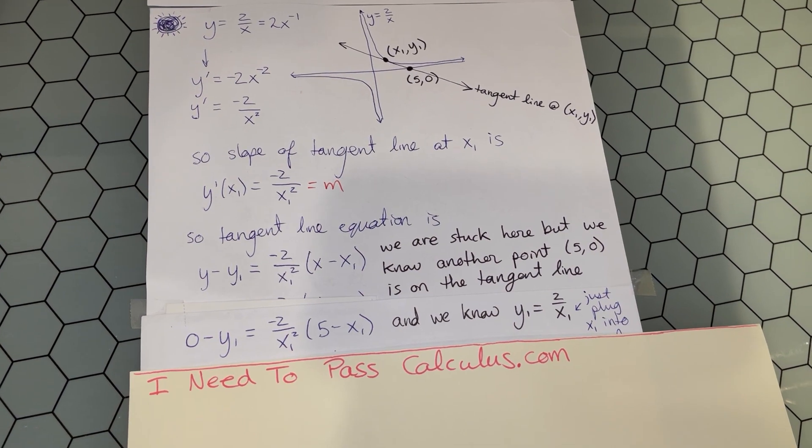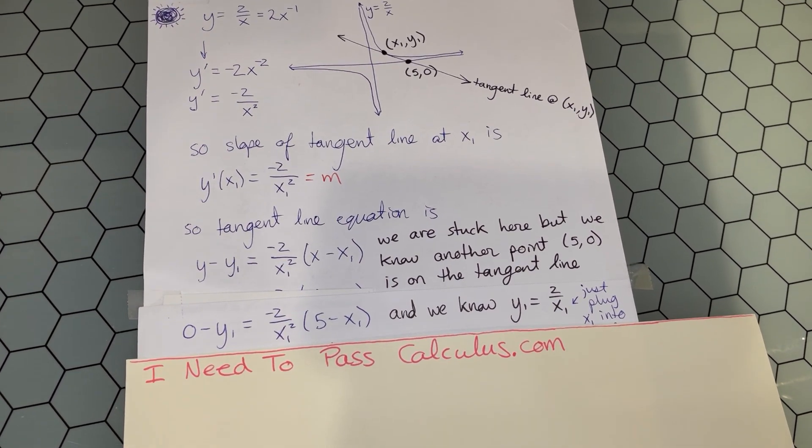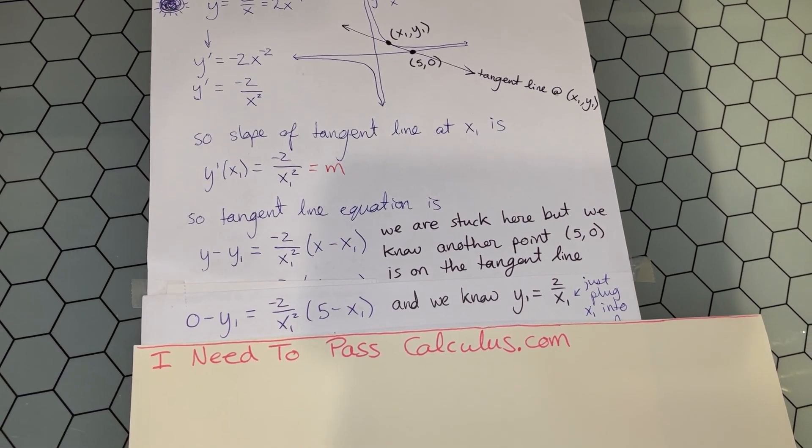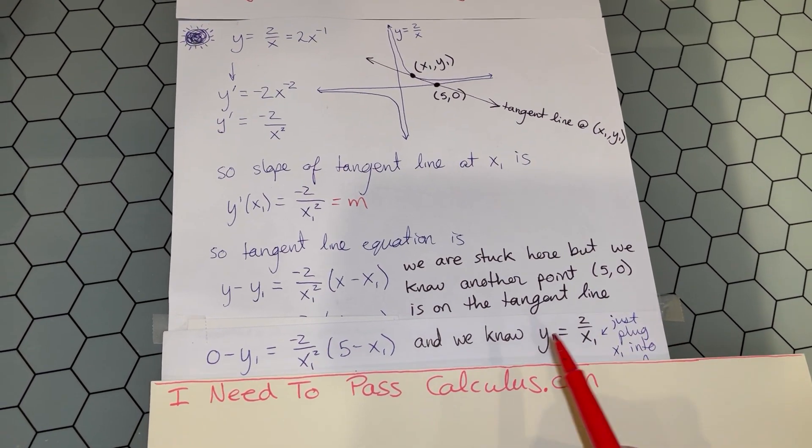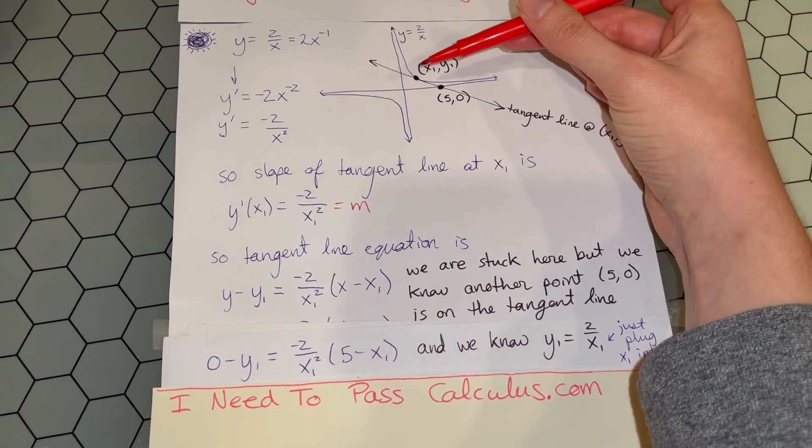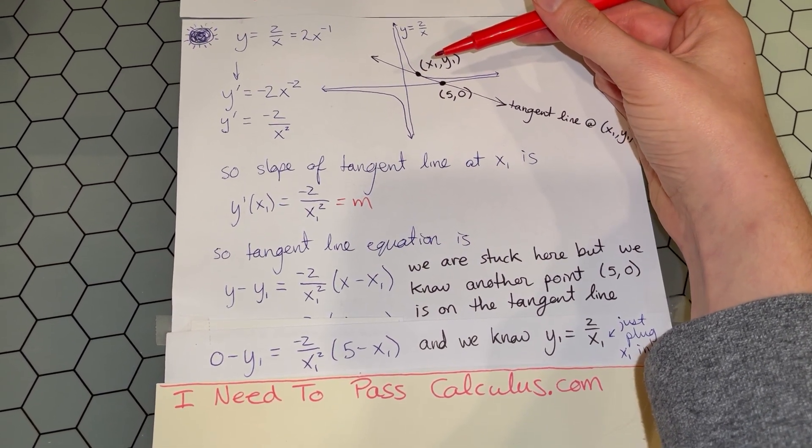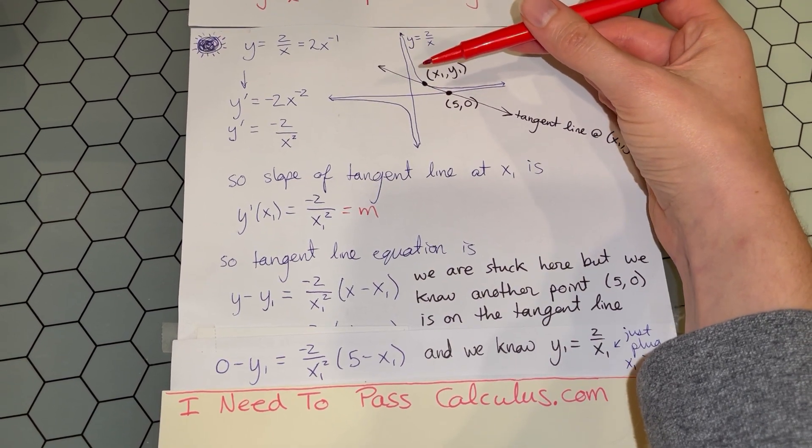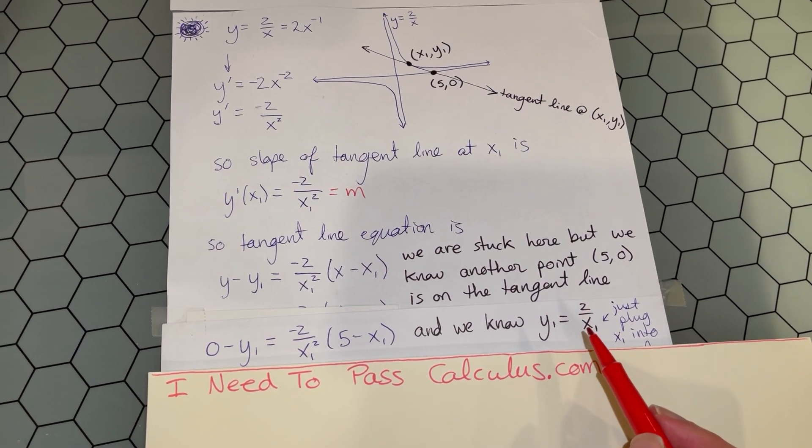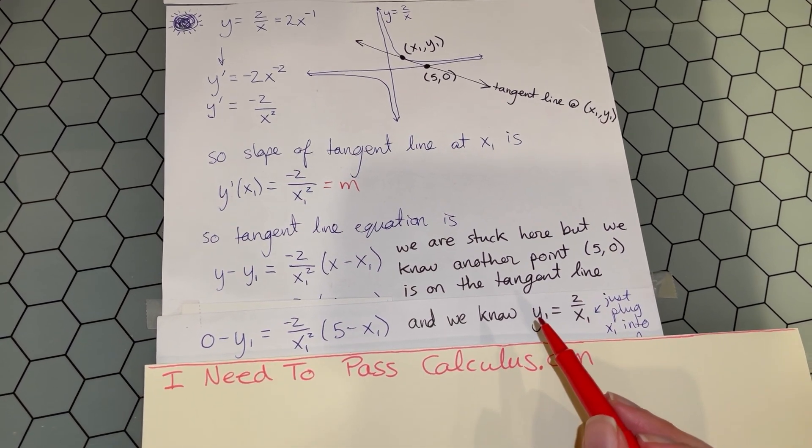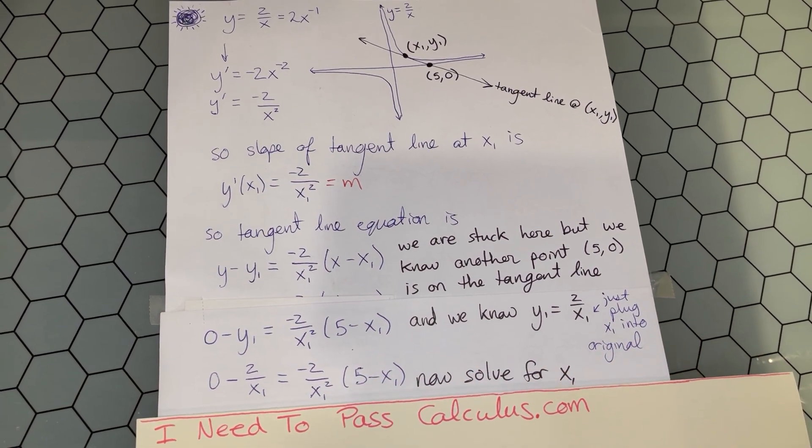We still have one equation and two unknowns: x₁ and y₁. But we have another piece of information. The y-coordinate y₁ is not allowed to be just anything. Once you choose x₁, it has to be on the curve 2/x, so the y-coordinate is y₁ = 2/x₁. We can substitute that back in.